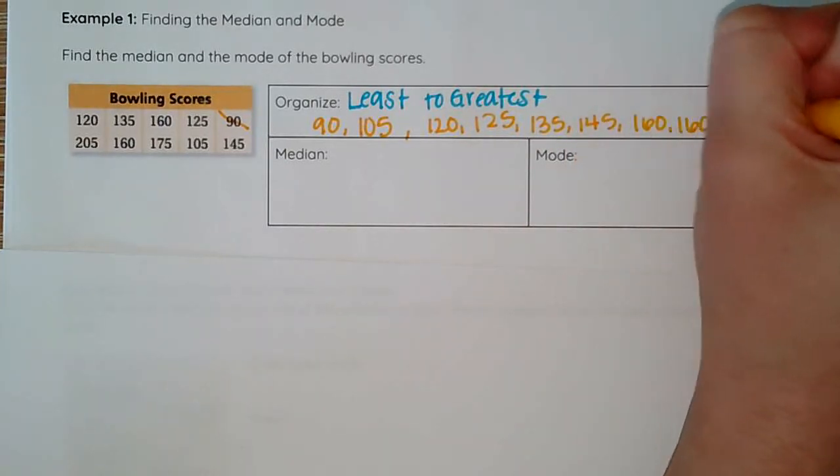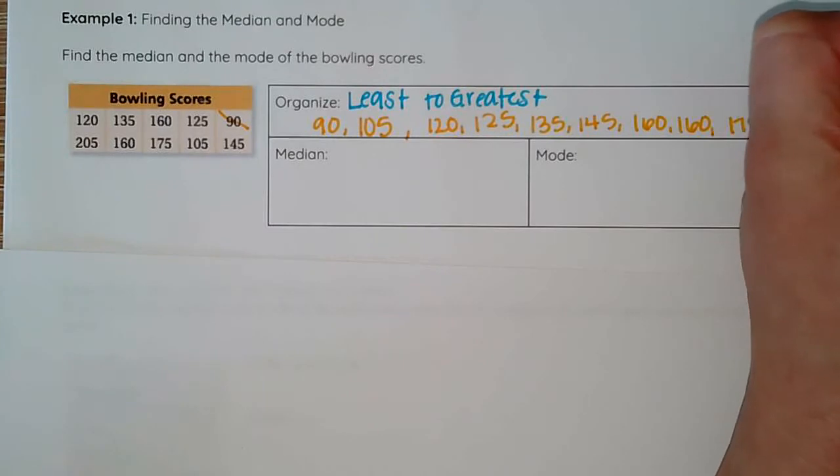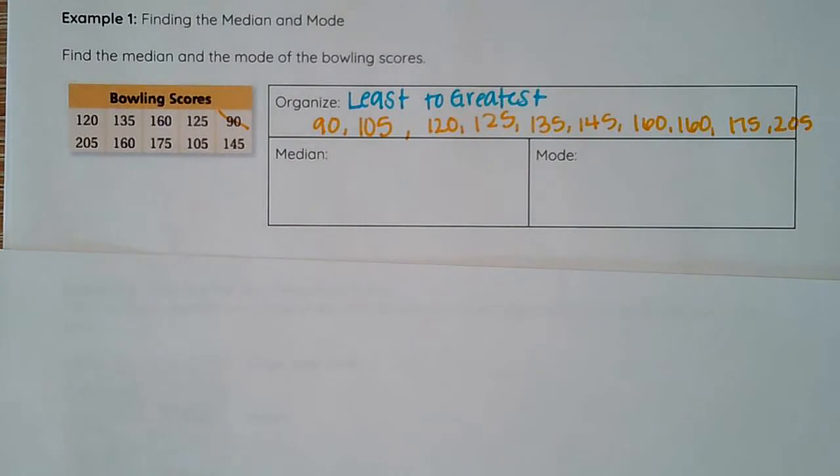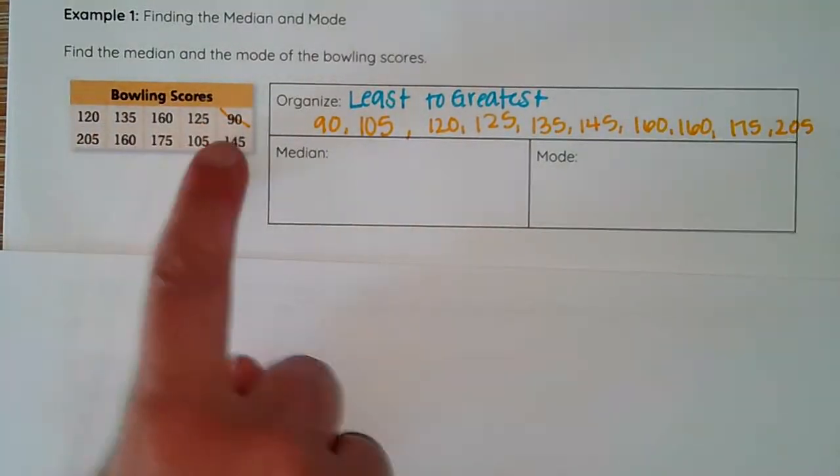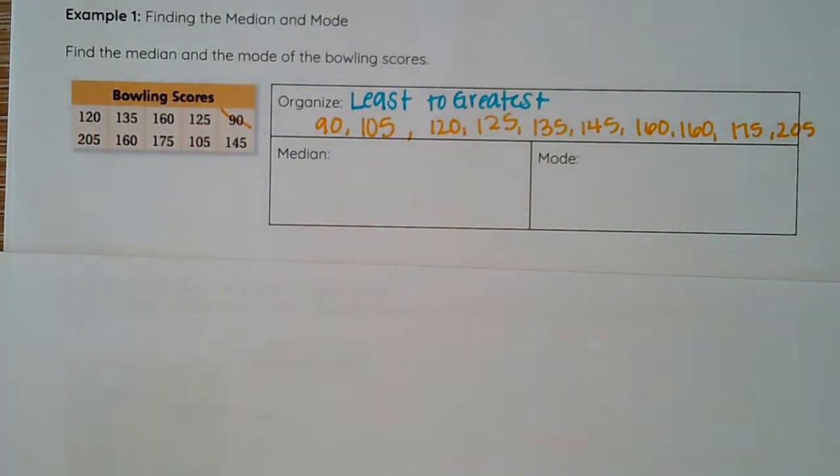160, 175, and 205. Like I said, you can cross these off as you go to help yourself track. Right here I've got my data organized. It is so important to have your data organized so you can more clearly see the numbers you're working with. For the median we need to have our data in order so that we can find that middle. Going through here and finding the middle is not going to work; these numbers are not in order.